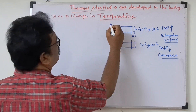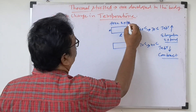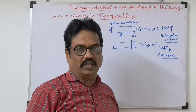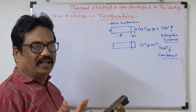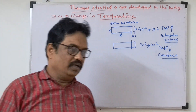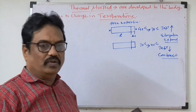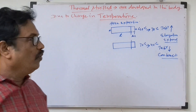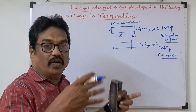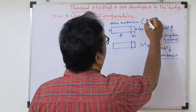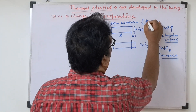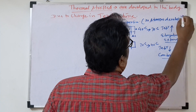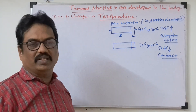Here, free expansions will be there. Due to free expansions, stress will not develop. Simple example: suppose you are writing an open book test — you are not feeling any stress, you are feeling very easy. But if you are writing a CAT exam, model exam, or university exam, stress will develop. That means you are not feeling free. So if free expansions are there, stress will not develop.